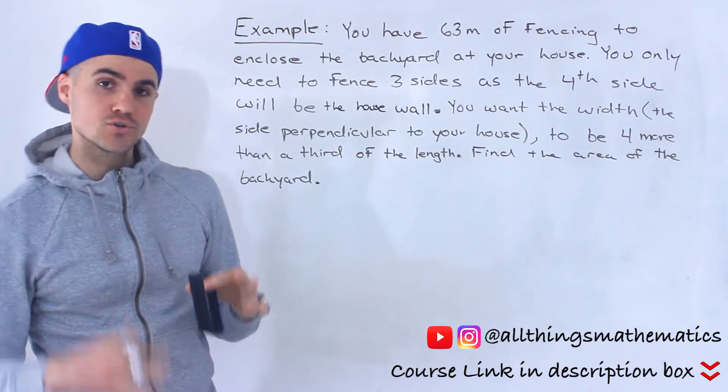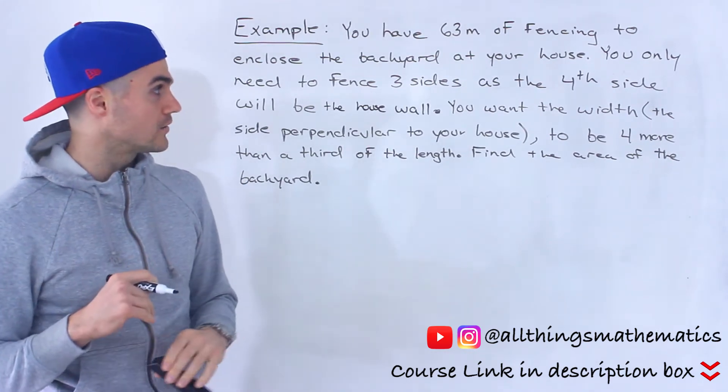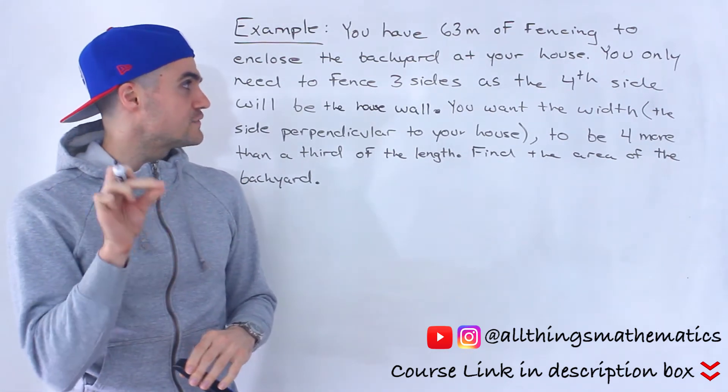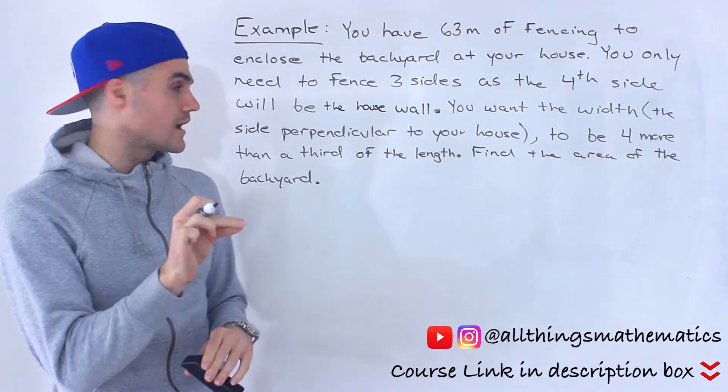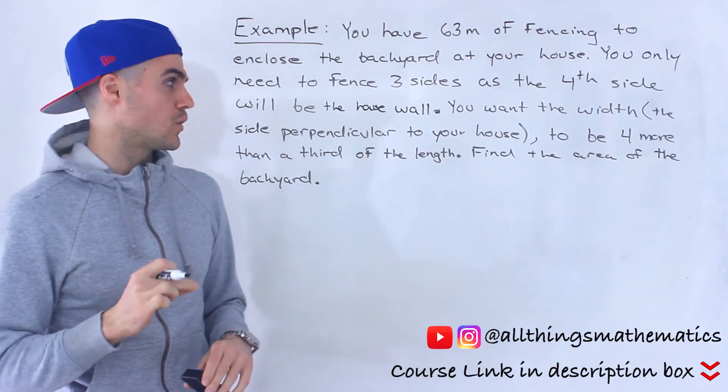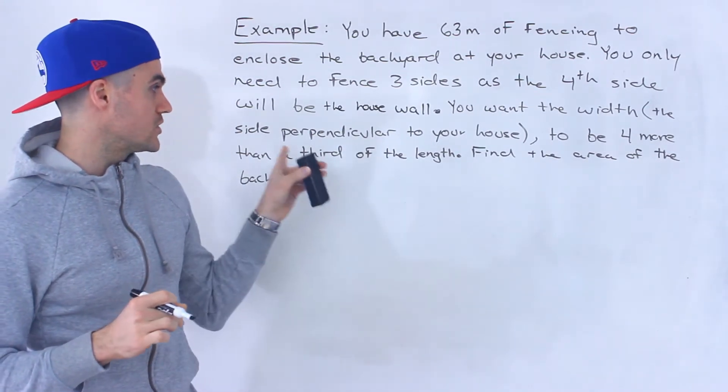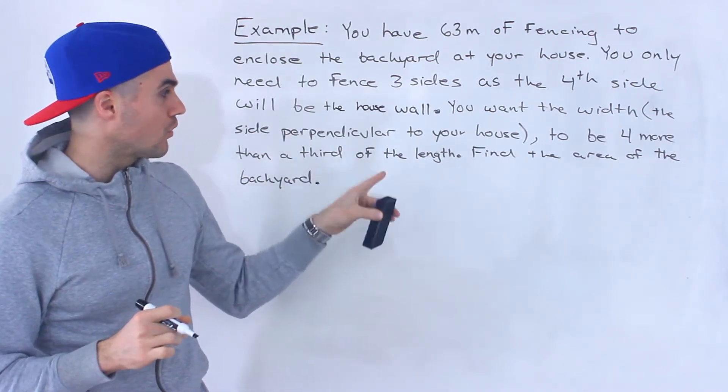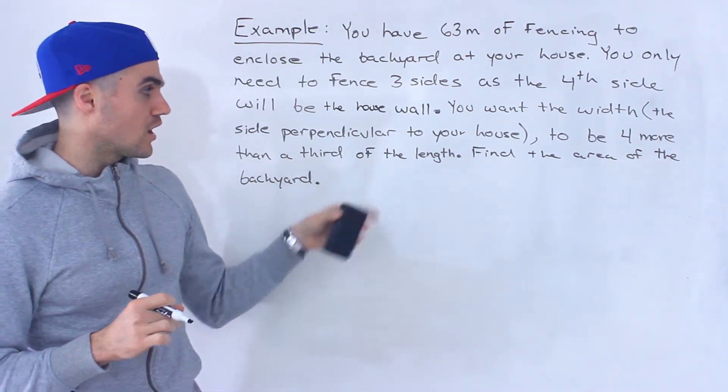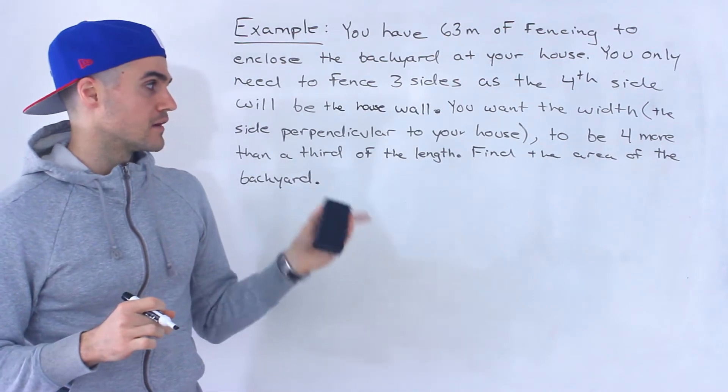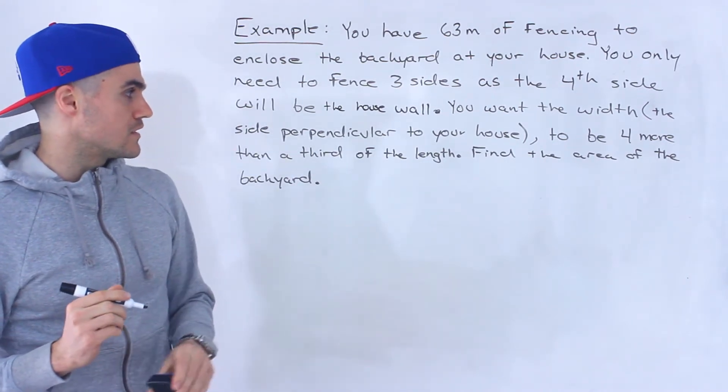So let's say you have 63 meters of fencing to enclose the backyard at your house. You only need to fence three sides as the fourth side will be the house wall. You want the width, which is the side perpendicular to your house, to be four more than a third of the length. Find the area of the backyard.